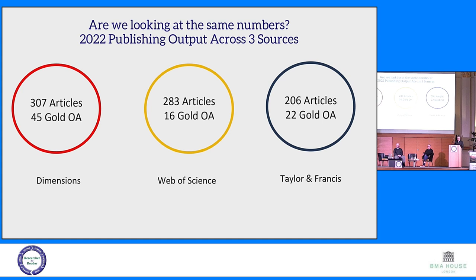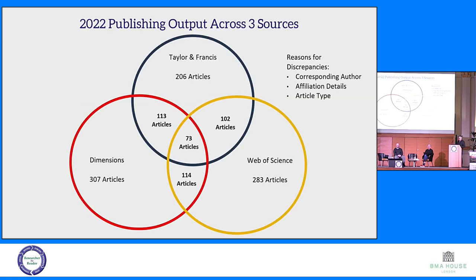The highest number is in Dimensions, and they have different counts of gold OA as well. There is an explanation for some of it — partly the timing of when things made it into those sources. But there are also discrepancies in who is counted as corresponding author across the different databases, some messy affiliation details, and different uses of article type. And this is just one publisher, one year, one institution. It's clear you'd need to do a lot of data cleanup even with just that amount.